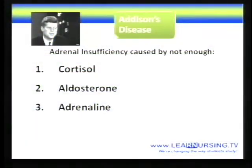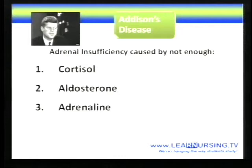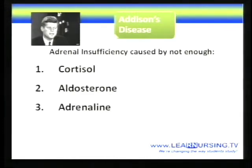The opposite of Cushing's is Addison's disease. In Addison's disease you want to add steroids — you don't have enough. That's another way to help you remember it. So this is going to be the mirror image of what we just talked about in Cushing's. In Cushing's we had too much cortisol and aldosterone going on; in Addison's we don't have enough.